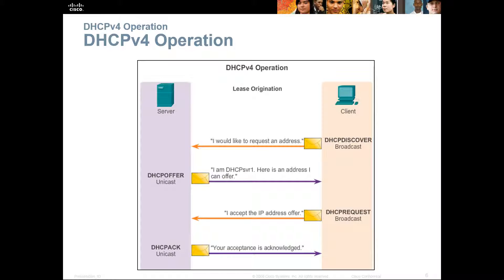For basic operations, when a client comes up it sends a DHCP Discover broadcast, basically stating it would like to request an address. The server sends a unicast DHCP Offer back saying it can provide an address. The client responds with a broadcast DHCP Request saying it will accept that IP address. Finally, the DHCP server sends a unicast acknowledgement — a DHCP ACK — confirming the address is assigned. That's how the client gets its address, two parts from each side.